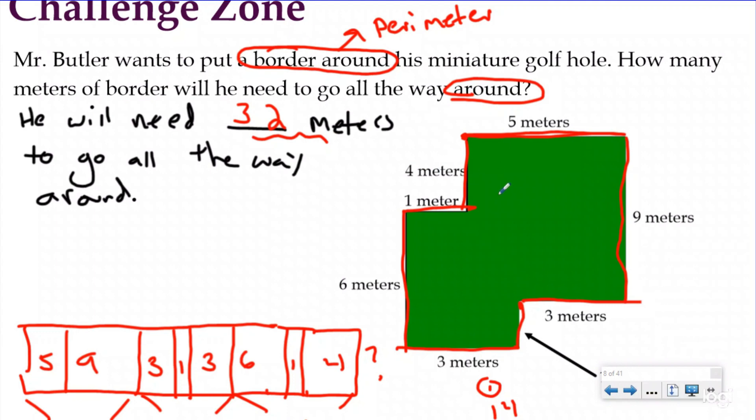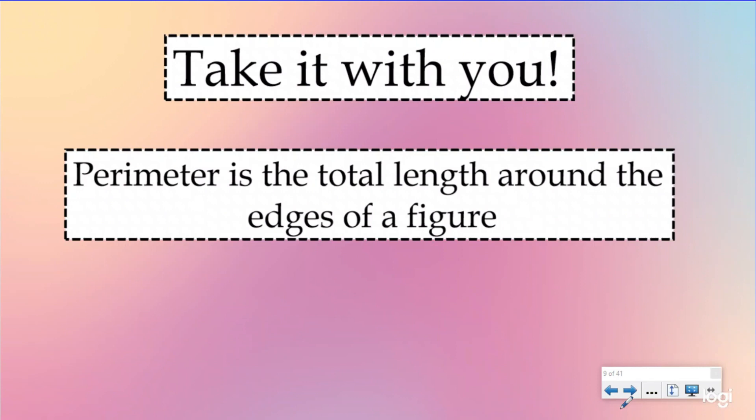So this was a challenge zone because it was an irregular figure. But what I'm trying to teach you is it doesn't matter. If you're finding the perimeter, you're just going around the edges of a figure. It doesn't have to be a triangle. It doesn't have to be a rectangle. It can be an irregular figure. It can be a hexagon. It could even be a dodecagon. Which leads us to what we want you to take with you from this lesson. If you forget everything else from this lesson, remember this: perimeter is the total length around the edges of a figure.